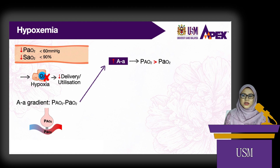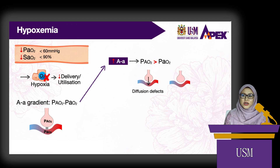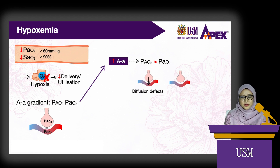Increased A-a gradient occurs when the alveolar pressure of oxygen is higher than the arterial pressure. This can occur in diffusion defects — for example, in fibrosis or pulmonary edema, there is an increase in diffusion distance or decreased surface area for diffusion. So the alveolar pressure of oxygen cannot equilibrate with the arterial pressure, the A-a gradient is increased, hence may cause hypoxemia.